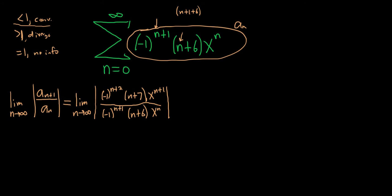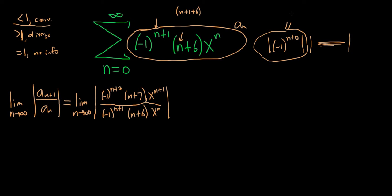So a couple of things. First, the negative 1 to the n's can go away. You can break it up, and the absolute value of negative 1 to any power is always going to be 1. The reason is it's going to be either 1 or negative 1 — the absolute value of 1 is 1, and the absolute value of negative 1 is 1. So you get 1 in any case. Let's go ahead and drop those.